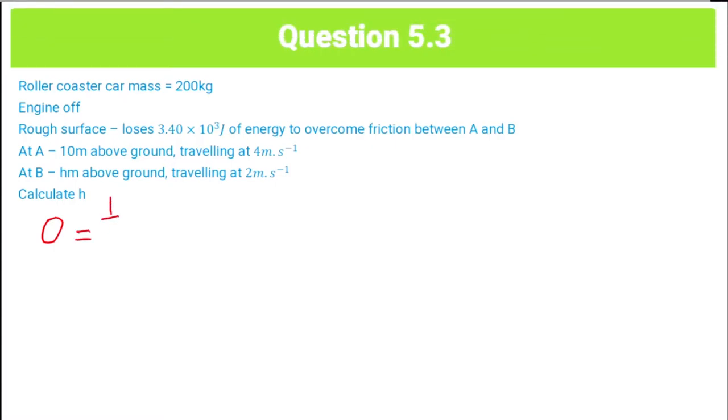And then I'd say equals half MVF squared. So that's the final velocity, the energy associated with that, plus the energy associated with the height of the object at its final point, point B in this case. And then I'm going to add here our 3.4 times 10 to the 3, our force of friction. And why am I doing that here? Well, basically, between points A and B, the block is moving but it's also undergoing friction. So during its movement there, it's going to lose energy that we need to account for in our equation.